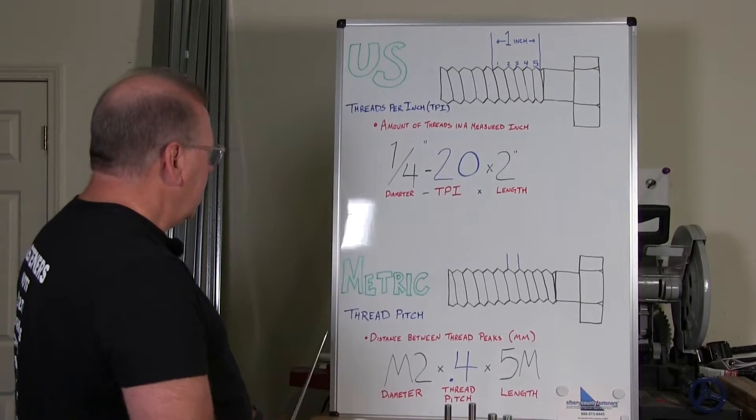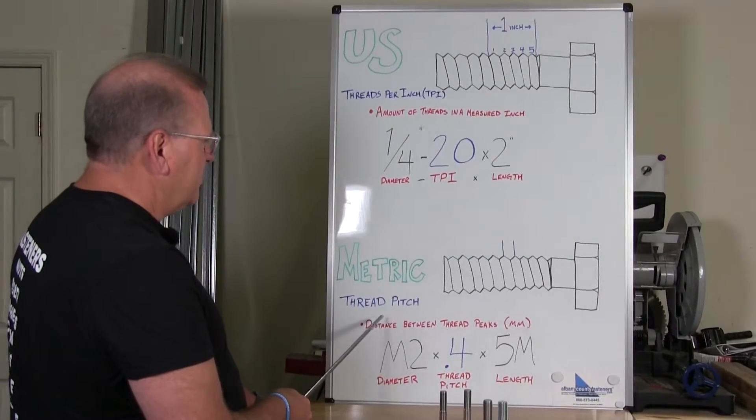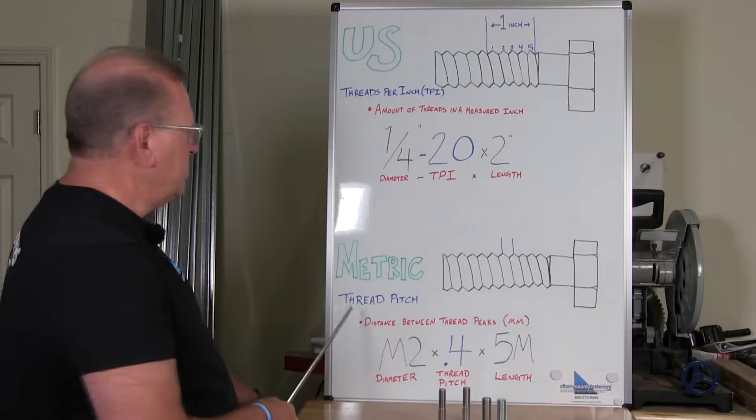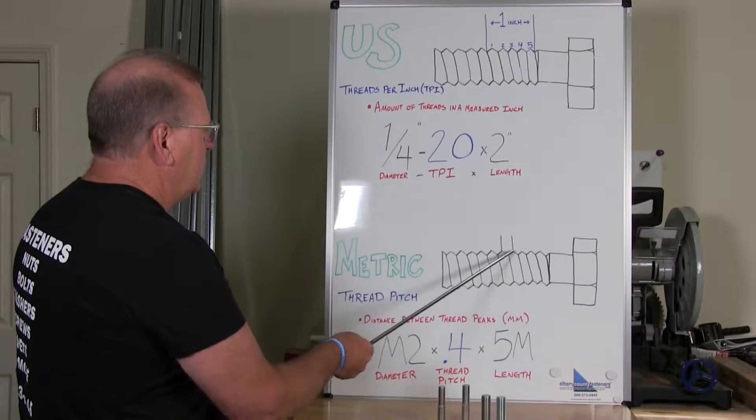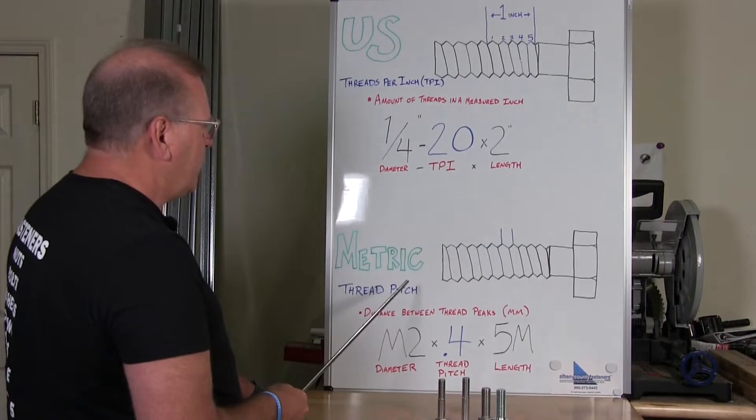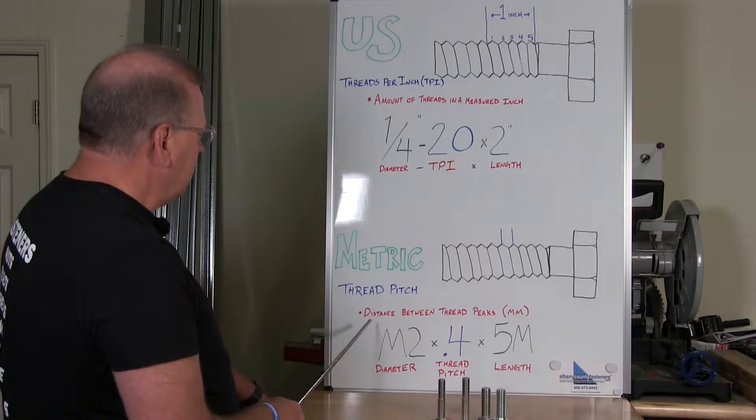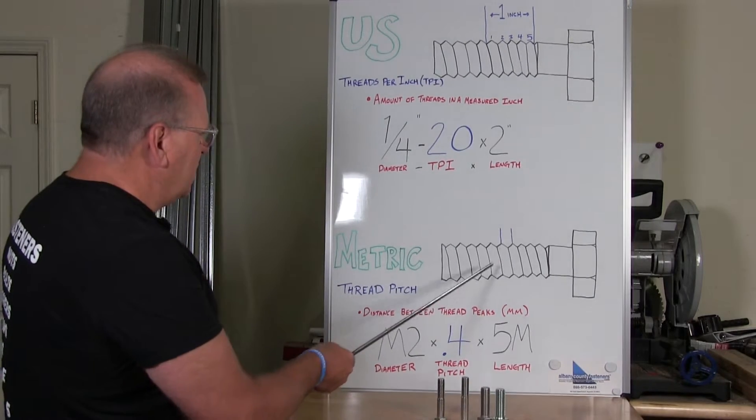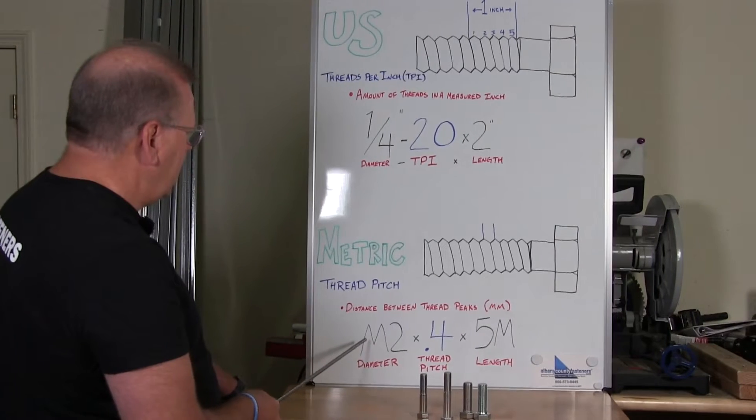That gives you your total bolt information. Metric, it's thread pitch, not threads per inch. So it's the pitch between the two high points of the thread. And how you would read that, it would be the distance between the peaks, the two peaks you see there.